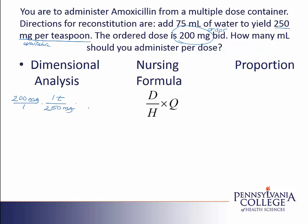We're asked to give the answer in milliliters, so I need another conversion to convert the teaspoons into milliliters. I have memorized that one teaspoon is the same as 5 milliliters. This allows us to cancel the label of teaspoons and to have our answer in milliliters. On my calculator, I'll take 200 times 5 and divide by 250, and that gives me an answer of 4 milliliters — the only label that wasn't canceled.